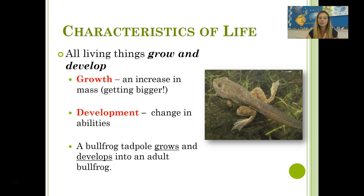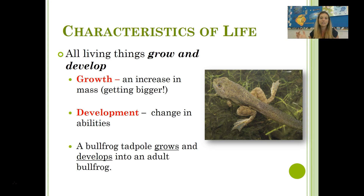The next characteristic of life is that all living things grow and develop. Grow simply means getting bigger — an increase in mass. Development refers to a change in abilities over the lifetime of the organism. A frog is a great example of both: the tadpole is much smaller than the adult bullfrog, so you see growth there, an increase in mass. But you also see this change in abilities as the organism goes through its lifespan. Think about humans — baby humans are much smaller than grown humans, so we have growth and we have development, abilities that change as our life goes on.